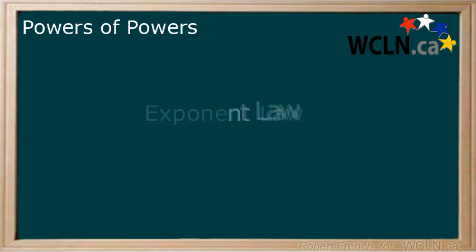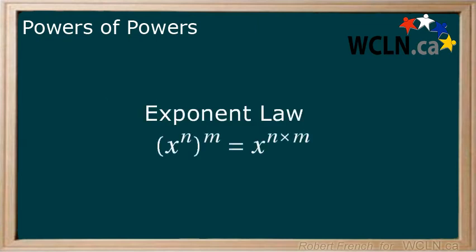This brings us to our next exponent law. A number raised to the power of n raised to the power of m is equal to that number raised to the power of n times m. Now say that 5 times fast.